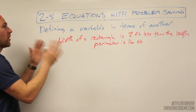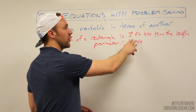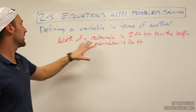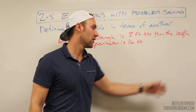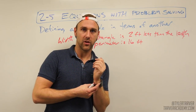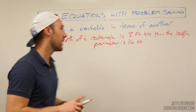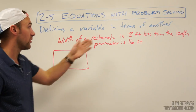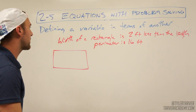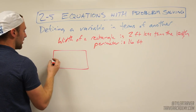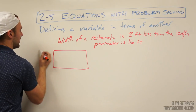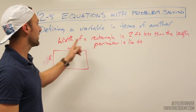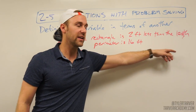Here's the basis of the problem: the width of a rectangle is two feet less than the length, and the perimeter is 16 feet. They might vary it — maybe the length is something more than the width, or they give you the area — but the gist is the same. First thing you should do anytime you have a shape problem: draw the shape. They give you scratch paper for a reason. So this is my length, this is my width.